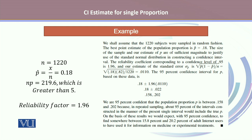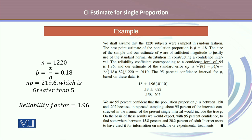This gives us a lower confidence limit of 0.158 and an upper confidence limit of 0.202. We are therefore 95% confident that the population proportion p lies between 0.158 and 0.202. In repeated sampling, about 95% of intervals constructed in this manner would include the true value of p. On the basis of these results, we would expect between 15.8% and 20.2% of adult Internet users to have used it for information on medicine or experimental treatment.